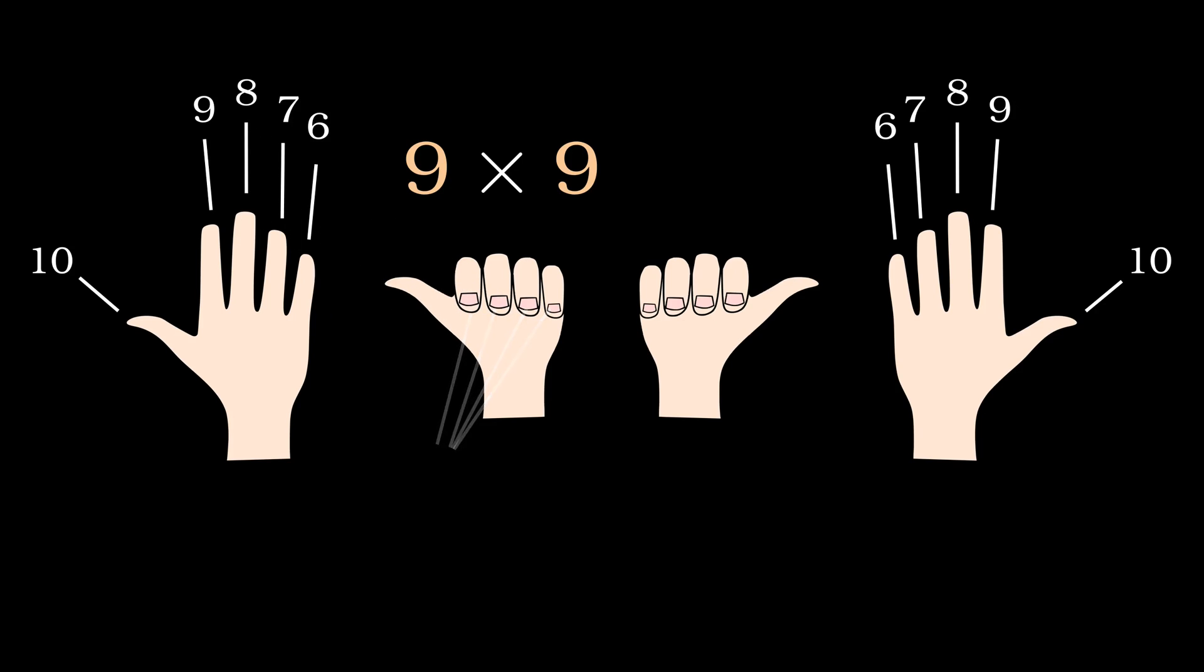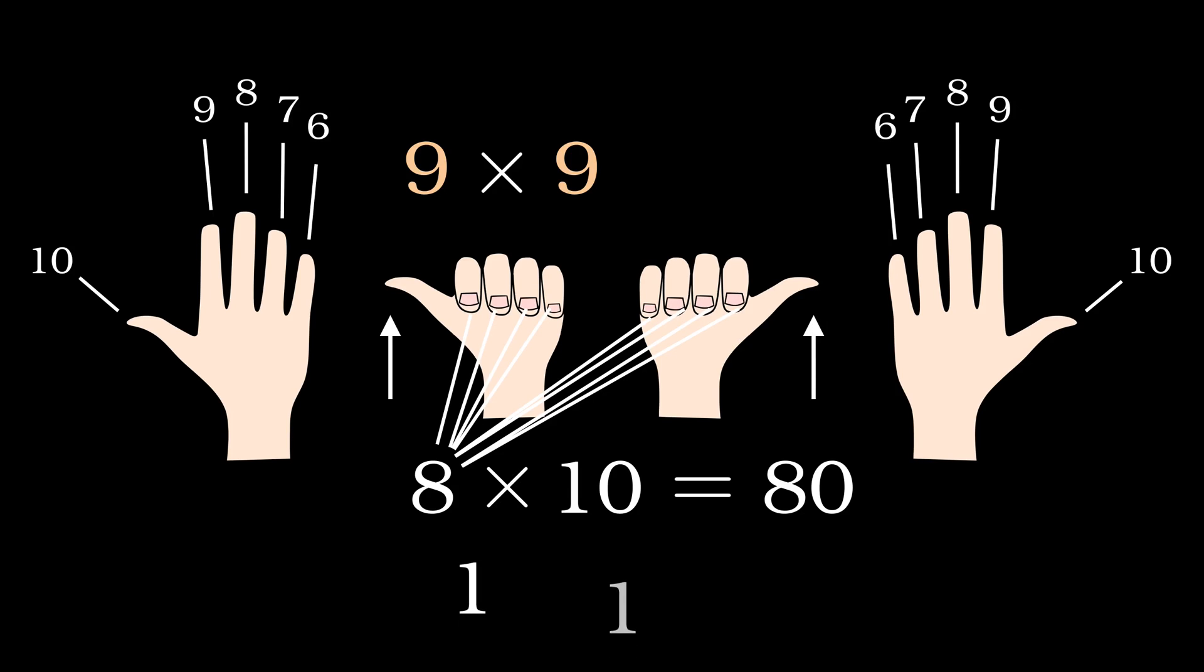As you can see, we're holding down 8 fingers all together. Each of these fingers represents a 10, and we've got 8 tenths or 80 so far. Now we've got one finger sticking up on the left hand and one finger sticking up on the right hand, so 1 times 1 equals 1.